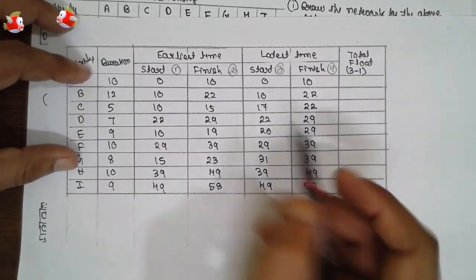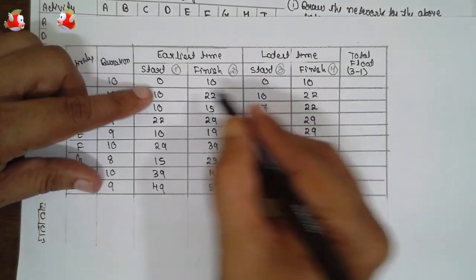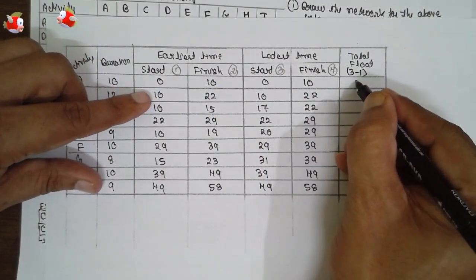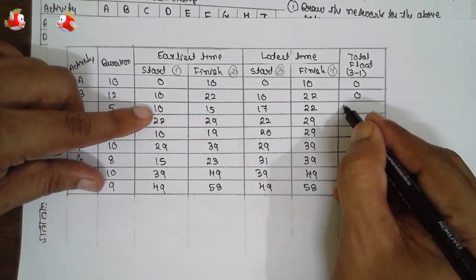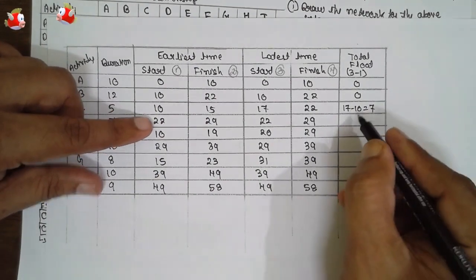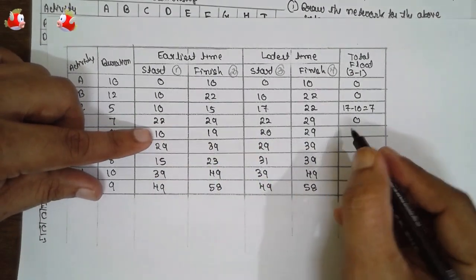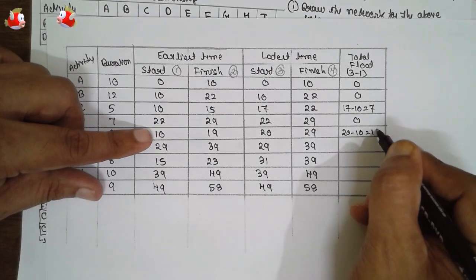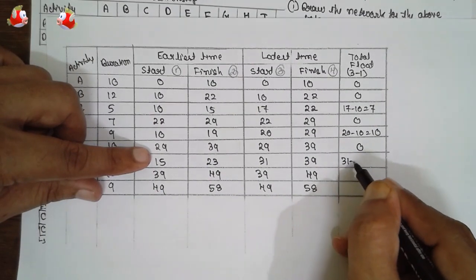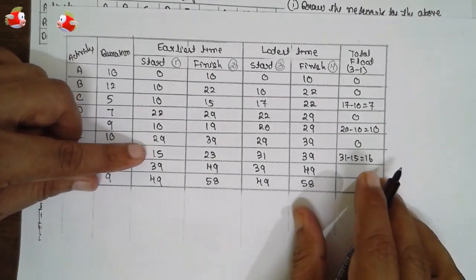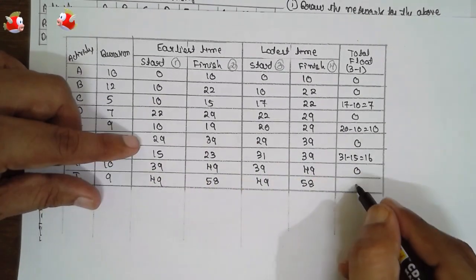Now we have to find out the total float. Total float is 3 minus 1. 0 minus 0, 0. 10 minus 10, 0. 17 minus 10, 7. 29 minus 10, 10. 29 minus 29, 0. 31 minus 15, 16. 39 minus 39, 0. 49 minus 49, 0.